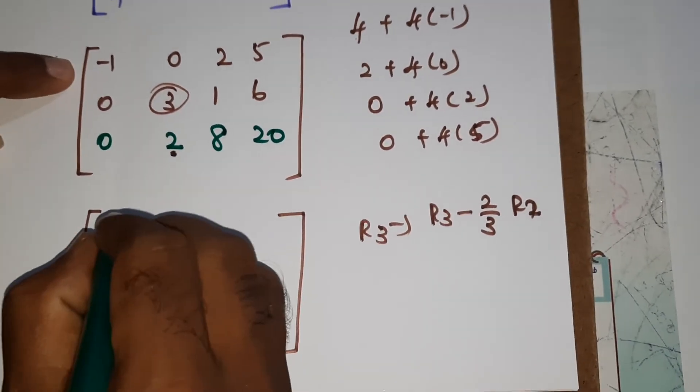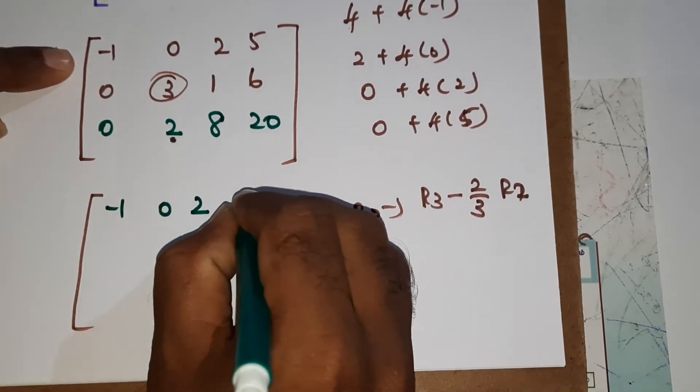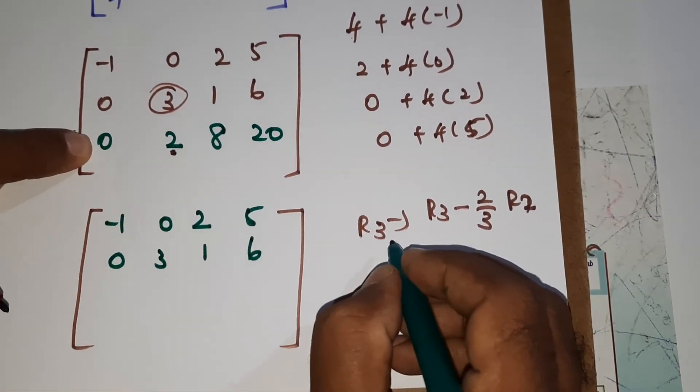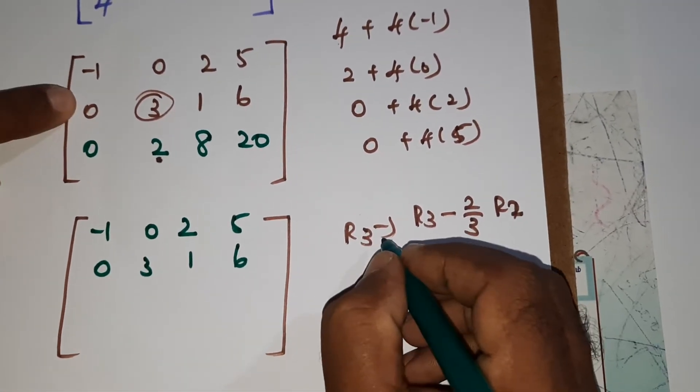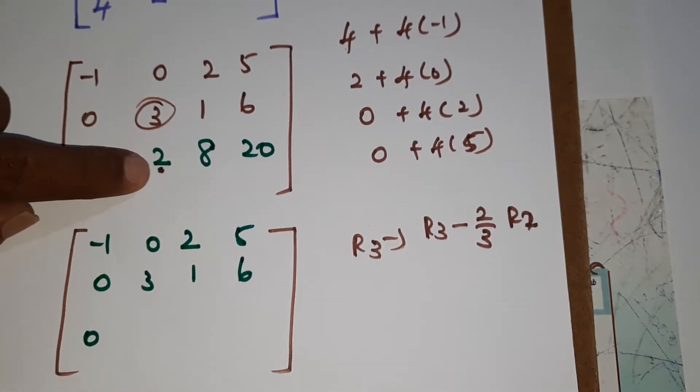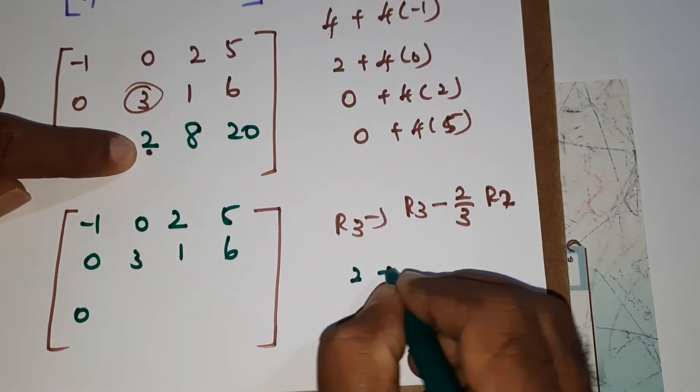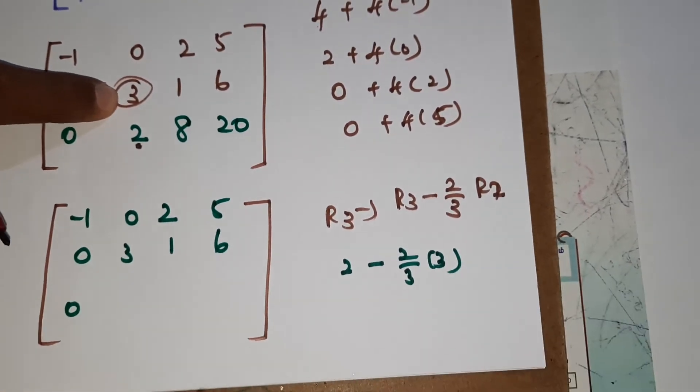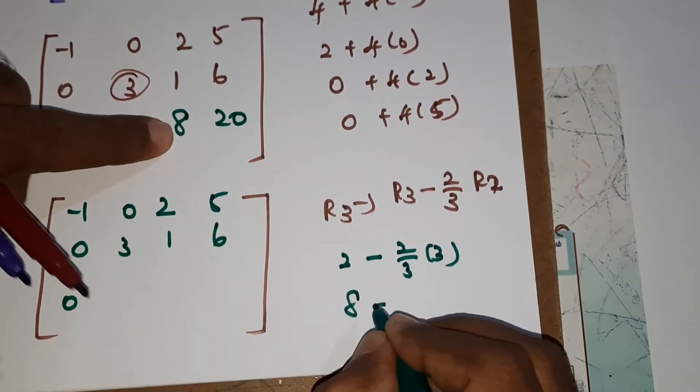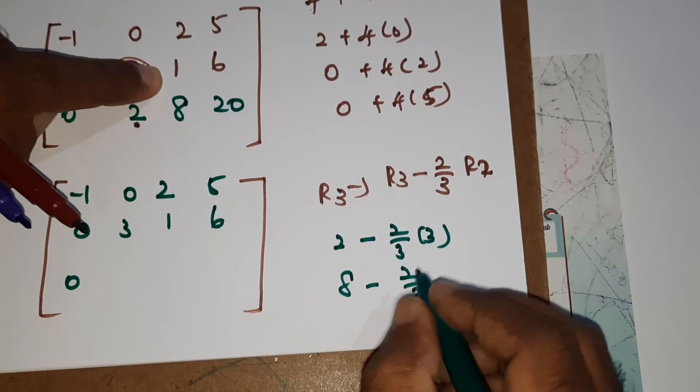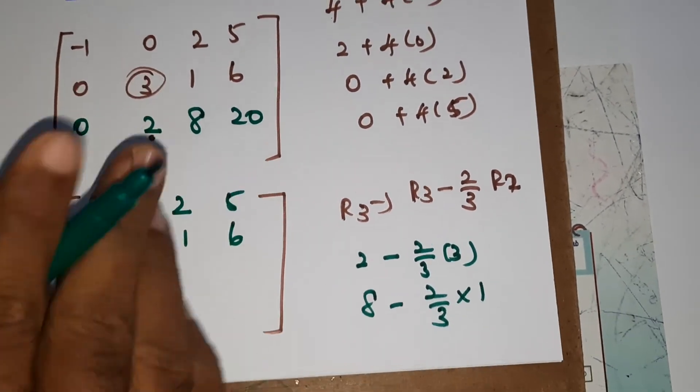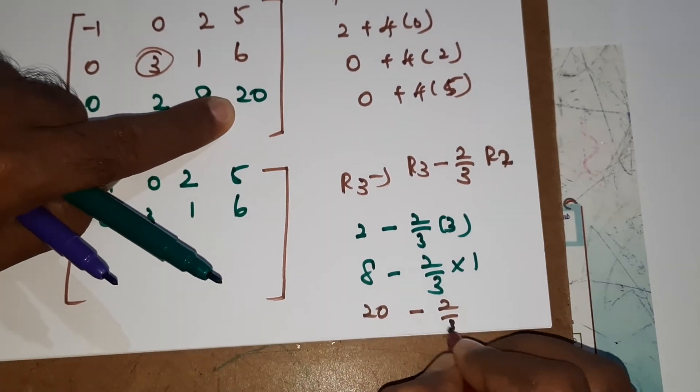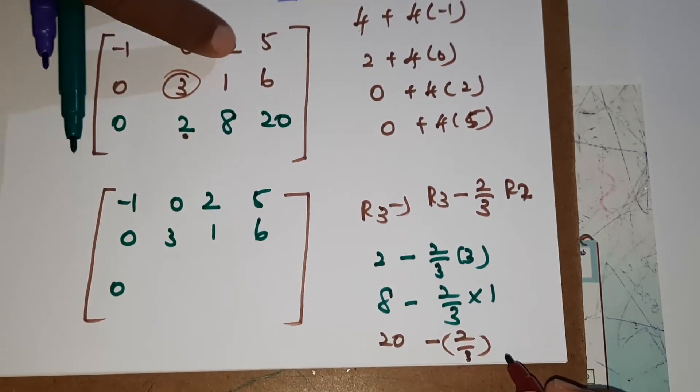So R1, R2 as it is. What is R1, R2? Minus 1, 0, 2 and 5. Then 0, 3, 1, 6. So R3, first element automatically we have 0. Then second element, 2 minus 2 by 3 into 3. The next one, 8 minus 2 by 3 into 1. Then last element, 20 minus 2 by 3 into 6.